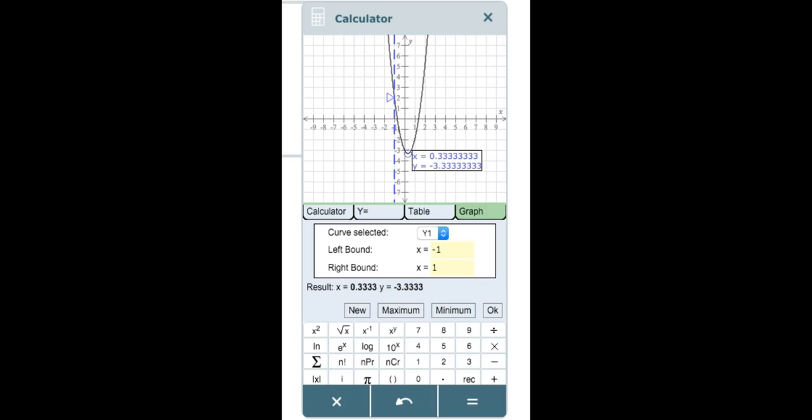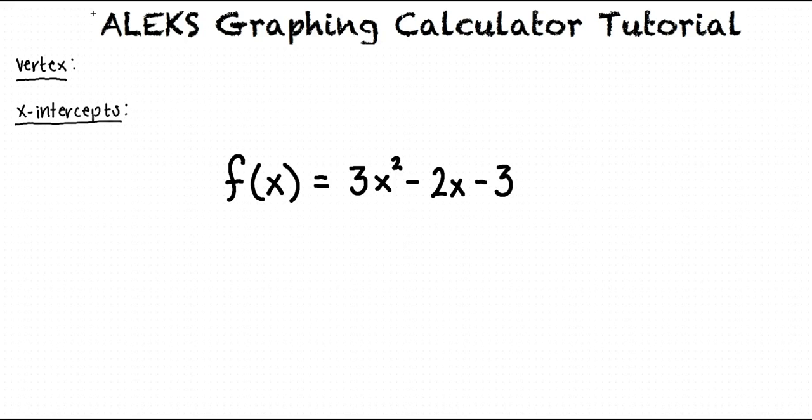Remember we were asked to round to the nearest hundredth. We found our vertex at (0.33, -3.33).